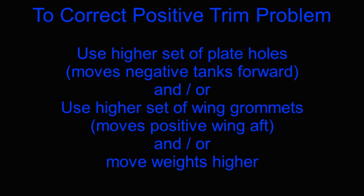In order to correct the positive trim problem, we can use any one of these possibilities or all of them together. The first one is to use a higher set of plate holes. What this is going to do is move the negative tanks forward, or we could also use a higher set of wing grommets. This will have the effect of moving the positively buoyant wing aft.